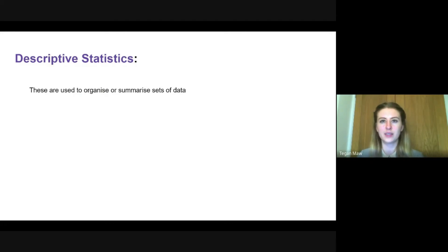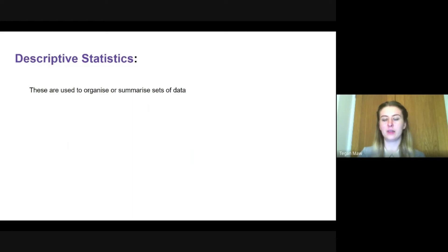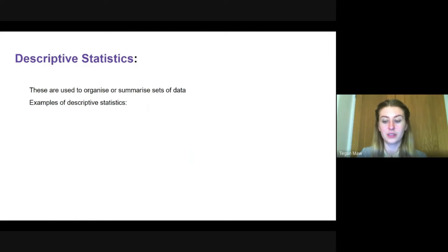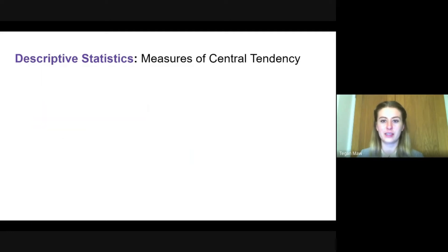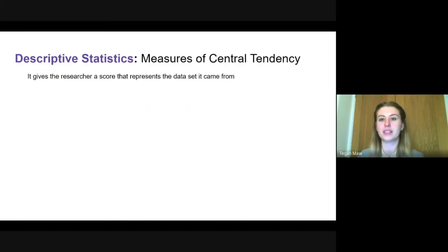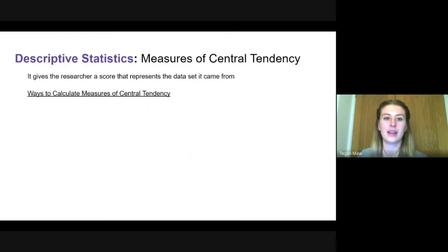Moving on to descriptive statistics — what actually are they? These are used to organize or summarize sets of data. Rather than picking out individual data points, you want a number that represents the entire data set to allow quick analysis. There are lots of different types, including measures of central tendency, the range, percentages, and standard deviation. For your GCSE you need to know the first three, so let's start with measures of central tendency.